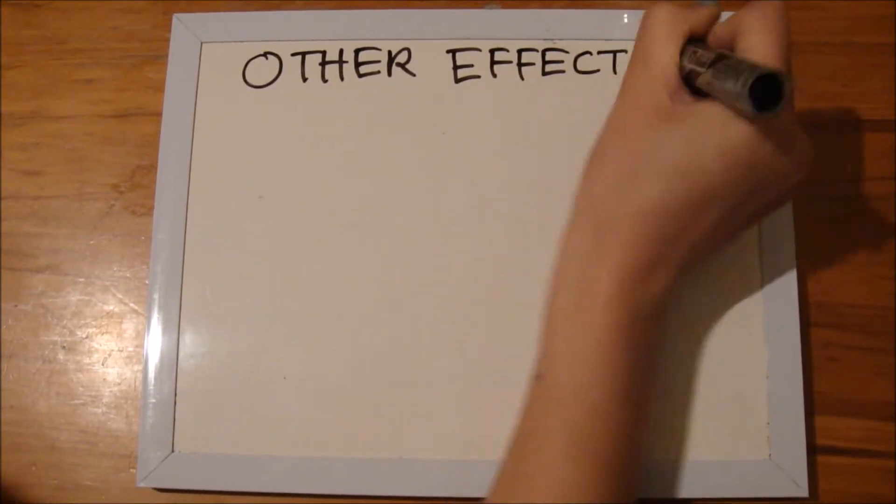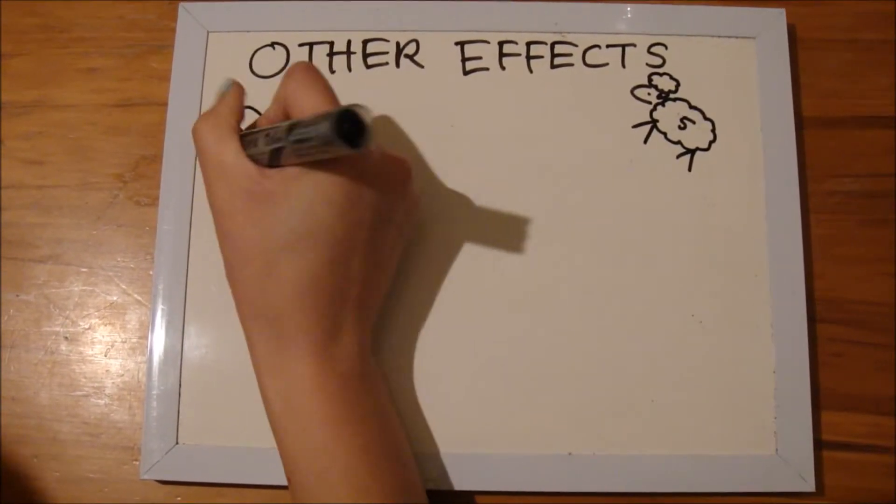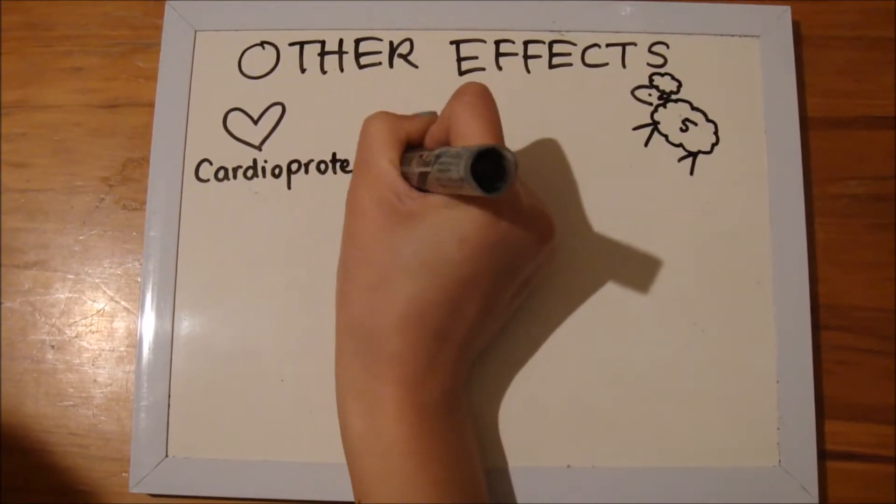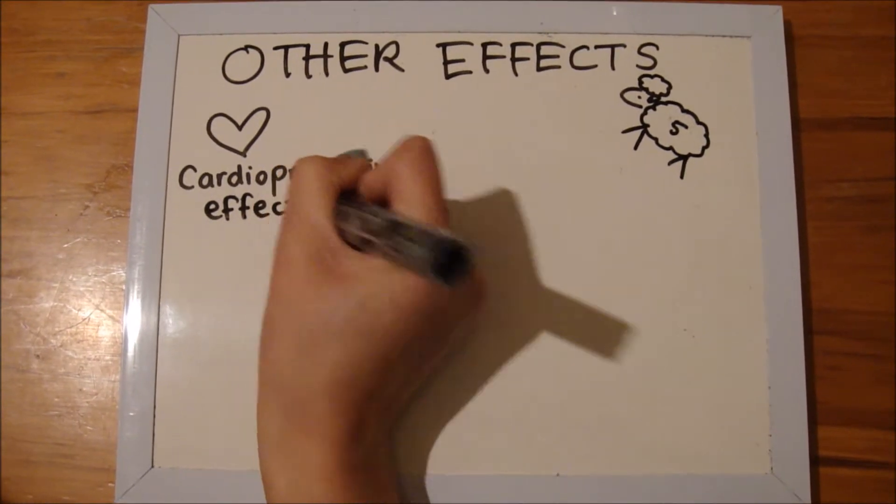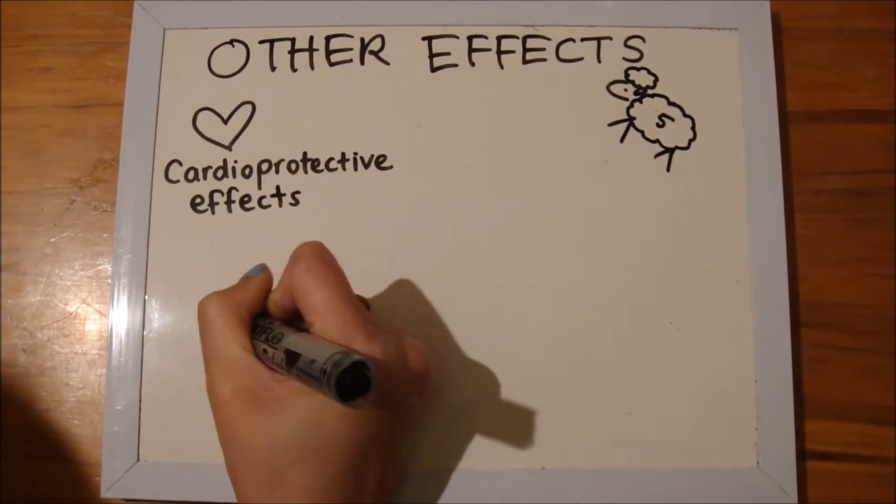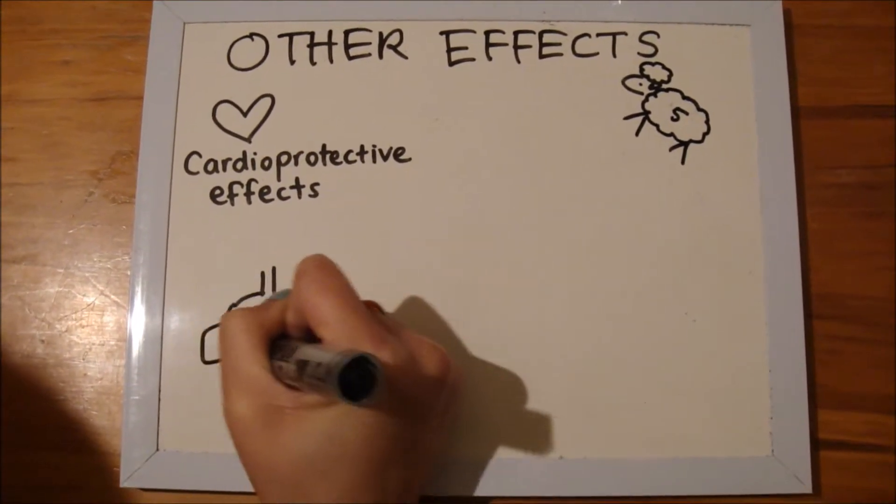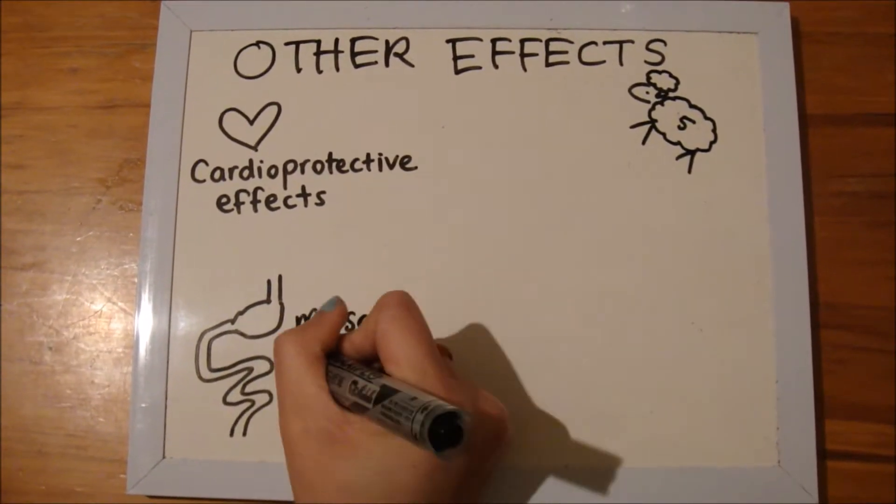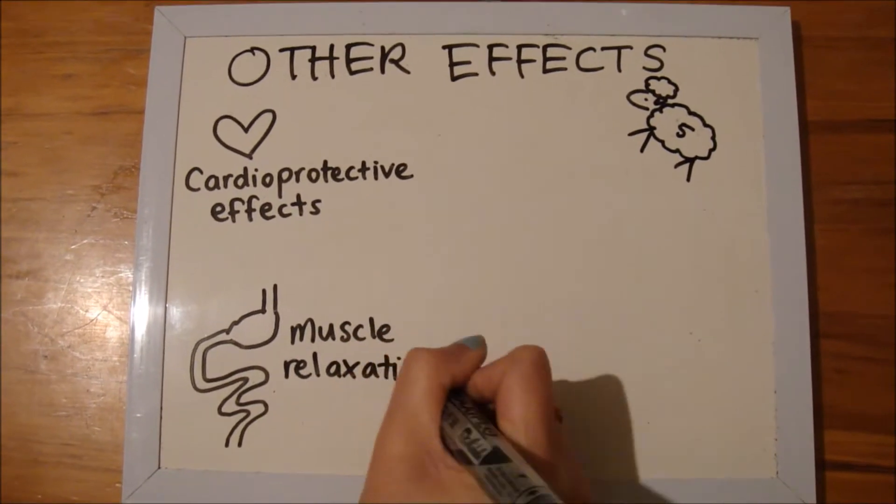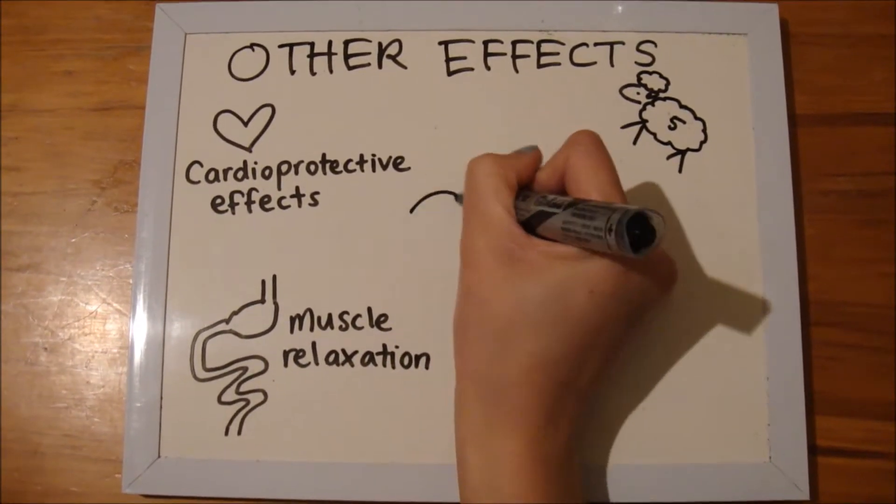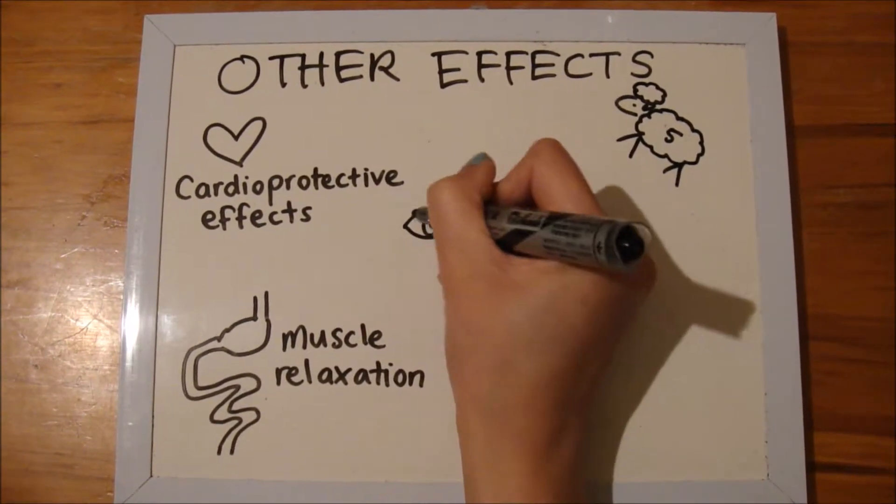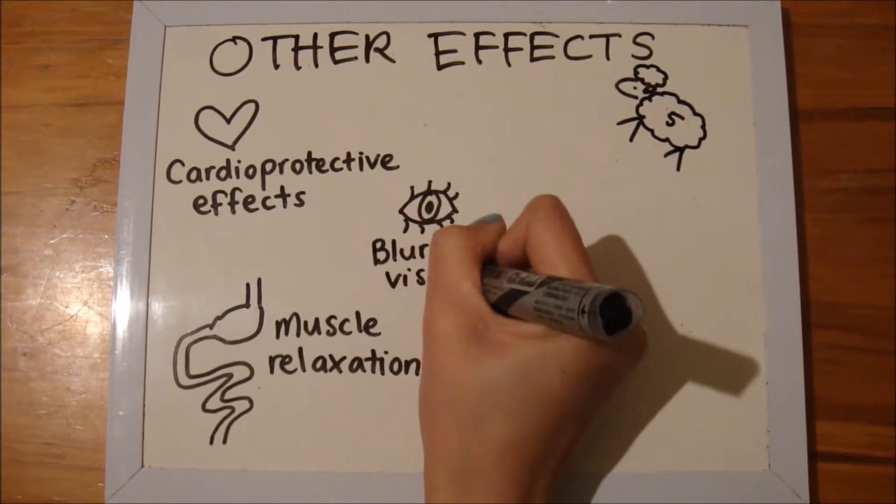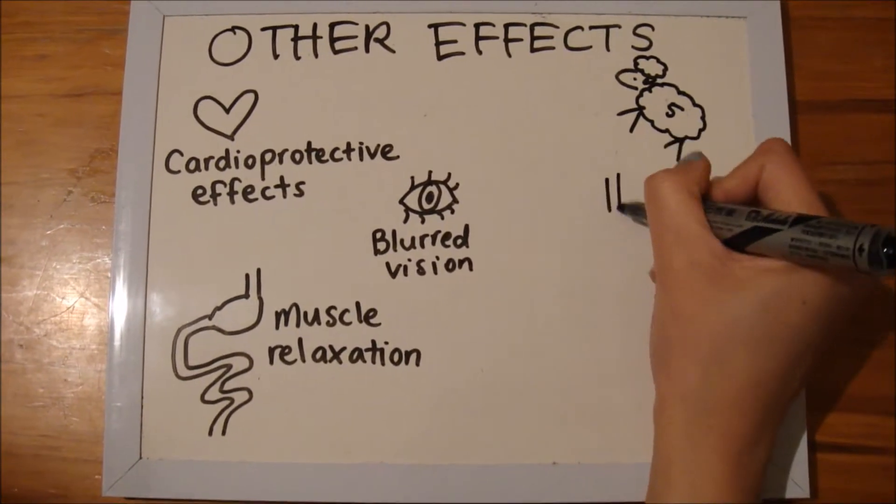Due to the widespread distribution of PDE5, sildenafil has other effects on multiple organ systems. It has a cardioprotective effect on the heart against ischemia reperfusion injury. It also has an effect on the gastrointestinal tract where it leads to muscular relaxation due to the inhibitory effects on the smooth muscle cells of the gastrointestinal tract. One of the side effects of sildenafil is that it leads to blurred vision.